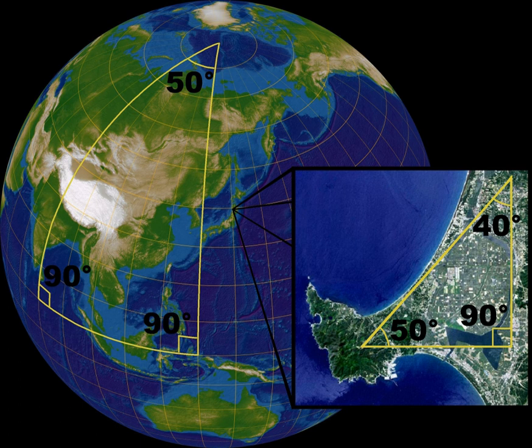The simplest model for elliptic geometry is a sphere, where lines are "great circles" such as the equator or the meridians on a globe, and points opposite each other called antipodal points are identified as the same. This is also one of the standard models of the real projective plane. The difference is that as a model of elliptic geometry a metric is introduced permitting the measurement of lengths and angles, while as a model of the projective plane there is no such metric. In the elliptic model, for any given line and a point A which is not on it, all lines through A will intersect.